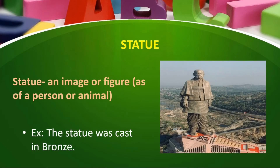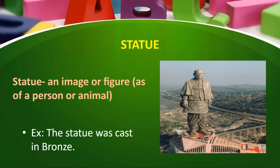The first word is statue. A statue is an image or figure of a person or animal made up of stone, wood, bronze, copper, brass, or clay. We create a statue in memory of somebody, in respect of somebody. Here you can see the Statue of Unity of our Indian leader Sardar Vallabhbhai Patel, who spent a lot of struggle in his life for freedom.